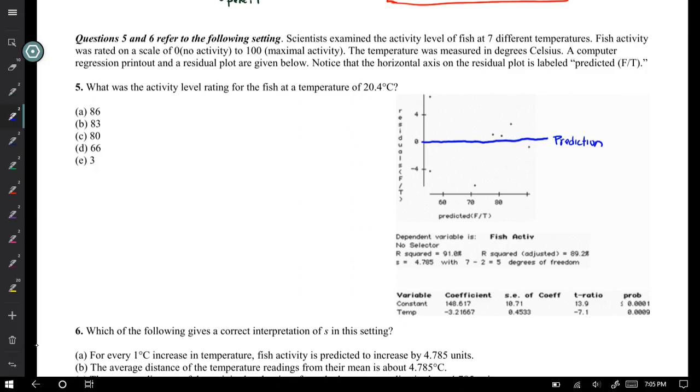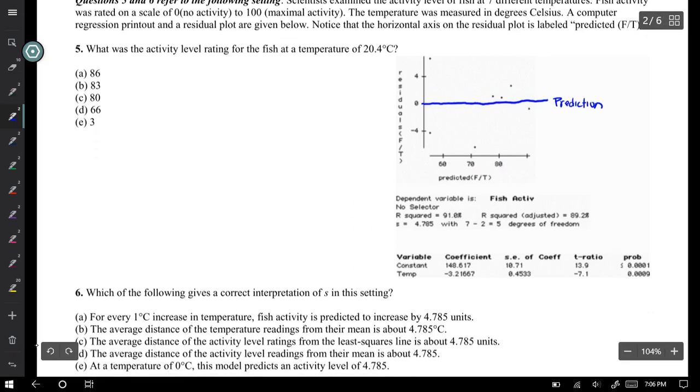What was the activity level rating for the fish at a temperature of 20.4 degrees Celsius? Well, if I look at this, here's my x-axis. It doesn't look anywhere near 20.4, so maybe I need to pay attention to my variables. Maybe that's where the computer output comes into play.